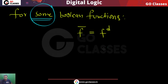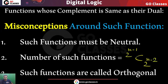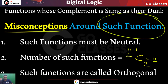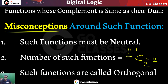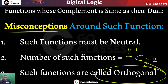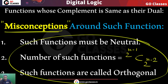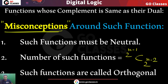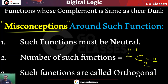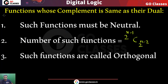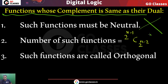For some boolean functions, their complement will be same as their dual. Now, what are the misconceptions related to this type of functions? First: such functions must be neutral — this is false. Second: the number of such functions is 2^(n−1) C 2^(n−2) — this is also wrong. Third: such functions are called orthogonal — this is also wrong. All three of these are misconceptions.